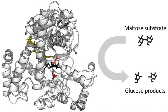In some enzymes, no amino acids are directly involved in catalysis; instead, the enzyme contains sites to bind and orient catalytic cofactors. Enzyme structures may also contain allosteric sites where the binding of a small molecule causes a conformational change that increases or decreases activity. A small number of RNA-based biological catalysts called ribozymes exist, which can act alone or in complex with proteins. The most common of these is the ribosome, which is a complex of protein and catalytic RNA components.